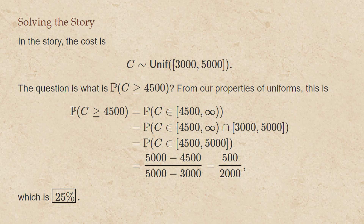In the story, the cost was uniform over the interval from $3,000 to $5,000, and the question asked for the probability that the cost is at least $4,500. Written in interval notation, that's the half-open interval from $4,500 up to infinity. Taking the intersection with [$3,000, $5,000], we get the interval from $4,500 to $5,000. The probability is then the length of that interval — $500 — divided by the length of the full interval — $2,000 — giving a final answer of 25%.